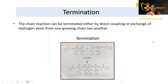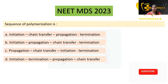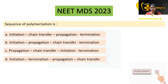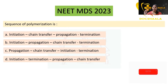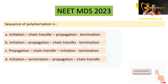So these are the chemical stages of polymerization. The question asked in the NEET MDS 2023 was about the sequence of polymerization, which is: initiation, propagation, chain transfer, and termination. The correct answer is option B.